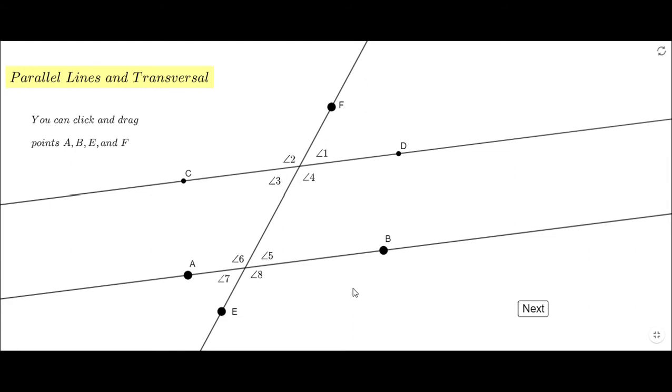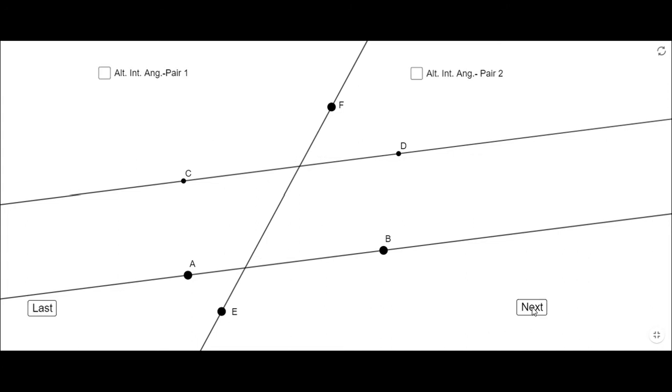The first one will be what we call alternate interior angles. Those are angles that are interior and one on one side of the transversal, one on the other side. Let's see the first pair, angle 3 and 5. Both of them have the same measure and if I want to change you will see it, it doesn't matter, the measure is the same.